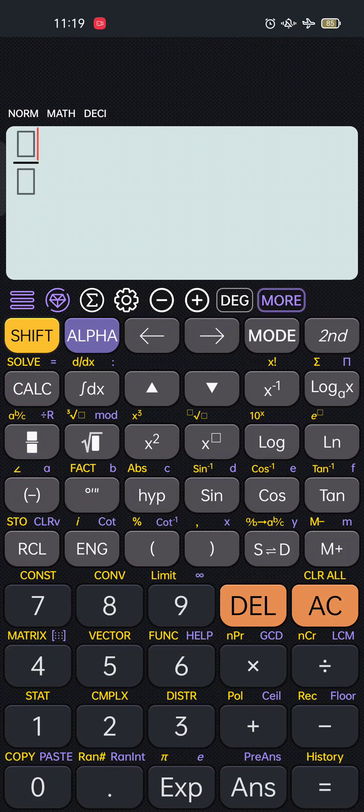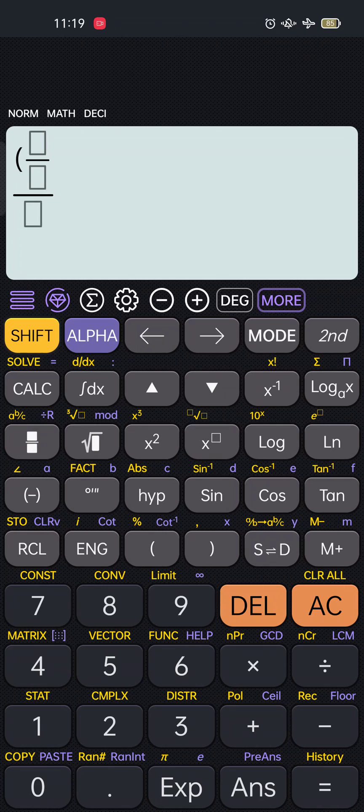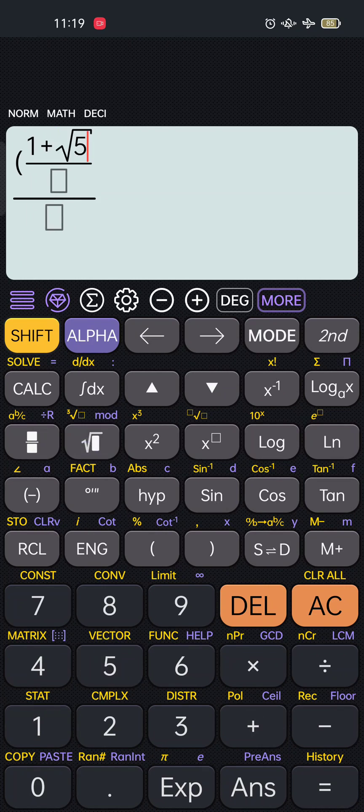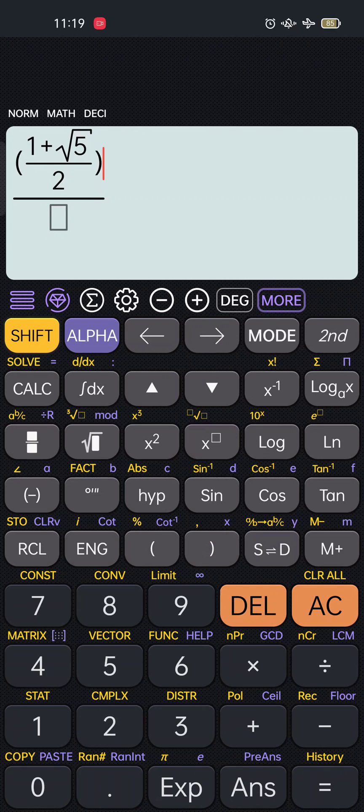First step is to press the fraction button and the open parenthesis button. Since we have a fraction at the numerator, we'll just have to press again the fraction button and encode the values. 1 plus the square root of 5 over 2 raised to the specific term we want to know. So in this case, raised to 50.